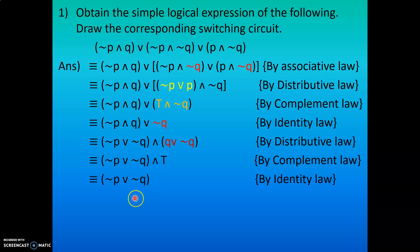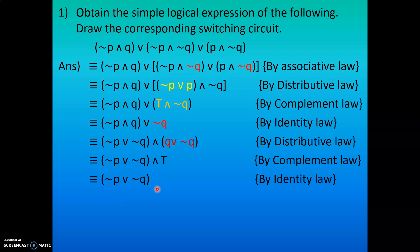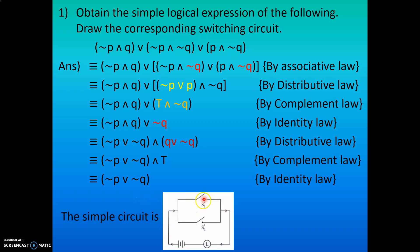By identity law, (¬P ∨ ¬Q) ∧ T = ¬P ∨ ¬Q. We cannot simplify further, so we stop here. The logical expression equivalent to the given question is ¬P ∨ ¬Q. The new circuit has a minimum of two switches: ¬P is switch S1' (closed) and ¬Q is switch S2' (closed). The corresponding simplified switching circuit has two switches S1' and S2' arranged in parallel, connected to a lamp and battery.